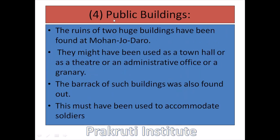The next feature is public buildings. Ruins of two huge buildings have been found at Mohenjo-daro. These two buildings may have been used as a town hall, theater, administrative office, or granary. Barracks were also found, which must have been used to accommodate soldiers. These are the features of Mohenjo-daro.